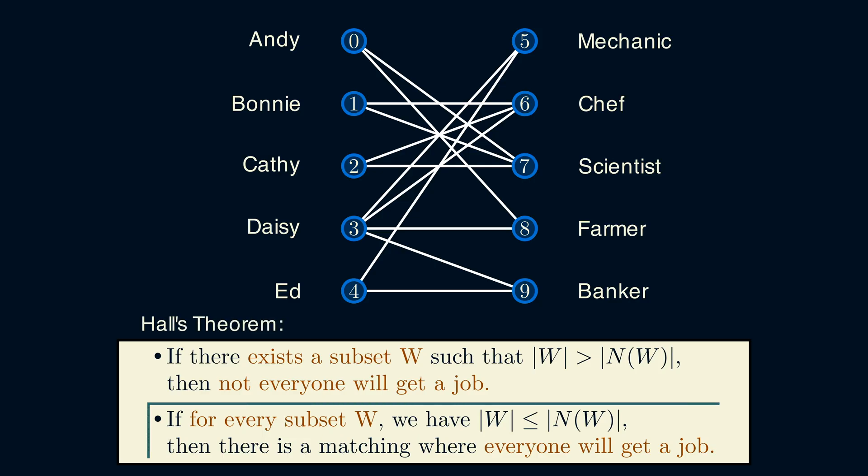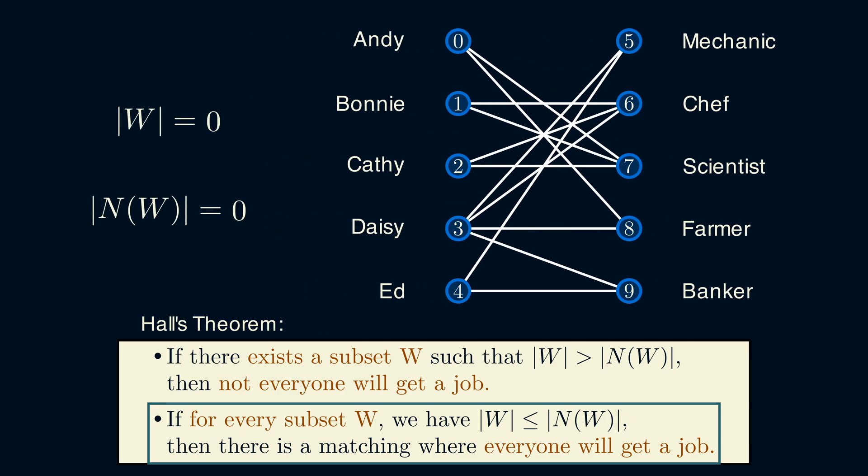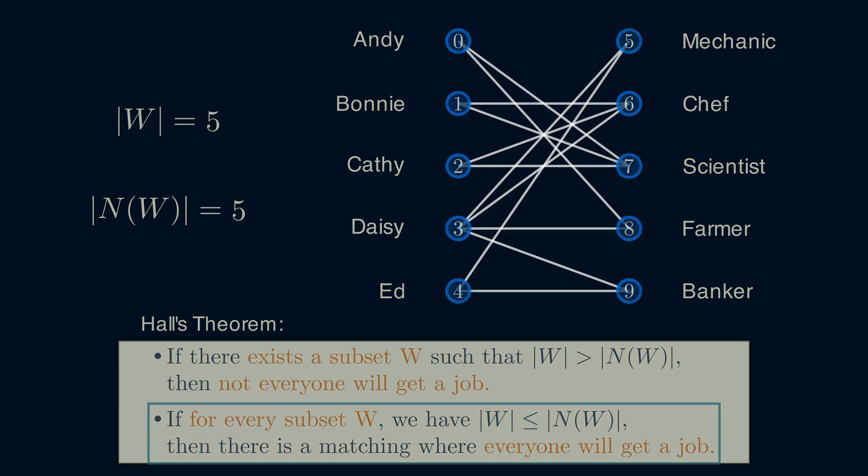This second statement helps us answer whether it's even possible to give everyone a job. It requires us to check each subset of people and compare it with its neighborhood. We can do this for our instance because we're working with a small graph, but generally, even for slightly larger graphs, it won't be possible to check all of the subsets. Fortunately for us, the second condition does hold in our case, so there is a matching that gives everyone a job. But Hall's theorem doesn't tell us exactly how we can find this matching.